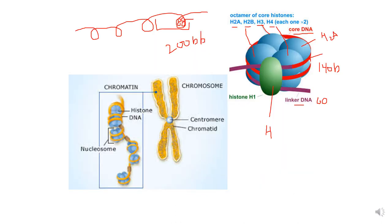In eukaryotes, DNA is associated with histone proteins. DNA has a negative charge because of its phosphate group, and histones have a positive charge. So the negatively charged DNA is wrapped around the positively charged histone proteins, which are formed of positively charged amino acids. The DNA is present around an octamer of histone proteins, and these histones are positively charged.